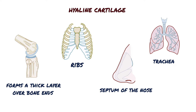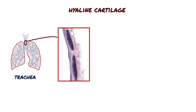Let's take a closer look at the structure of hyaline cartilage. This image is a longitudinal section of the trachea, which is an example of hyaline cartilage providing structural support.